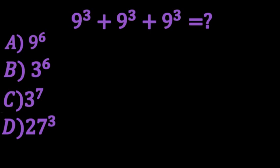And now with this one we have multiple choice options. So we have A which is 9 to the power of 6, B 3 to the power of 6, C 3 to the power of 7, or D 27 to the power of 3. So let's just jump in and figure out which one it is.